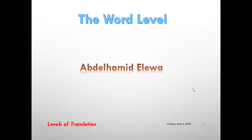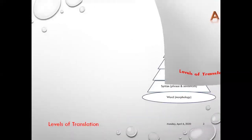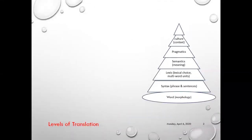The word level. The first thing we encounter in translation is the word. Much of what we do in translation is to open the dictionary to find the word meaning, even if we already know the word, even if we know a word which is similar in form to a word we already know. This is a time-consuming process. Today we'll learn how to save time.